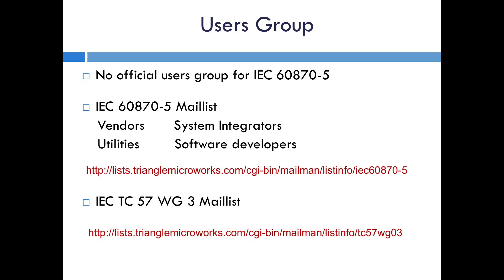As we wrap up, we look at how to get more information on these protocols. There's no official users group for IEC 60870-5; however, there is an IEC 60870-5 mailing list monitored by vendors, system integrators, utilities, and software developers — you can sign up by following the link shown. There's also an IEC TC 57 working group 3 mailing list, with the link shown as well. We hope you found this training useful. If you have any questions, feel free to contact us at support@trianglemicroworks.com.